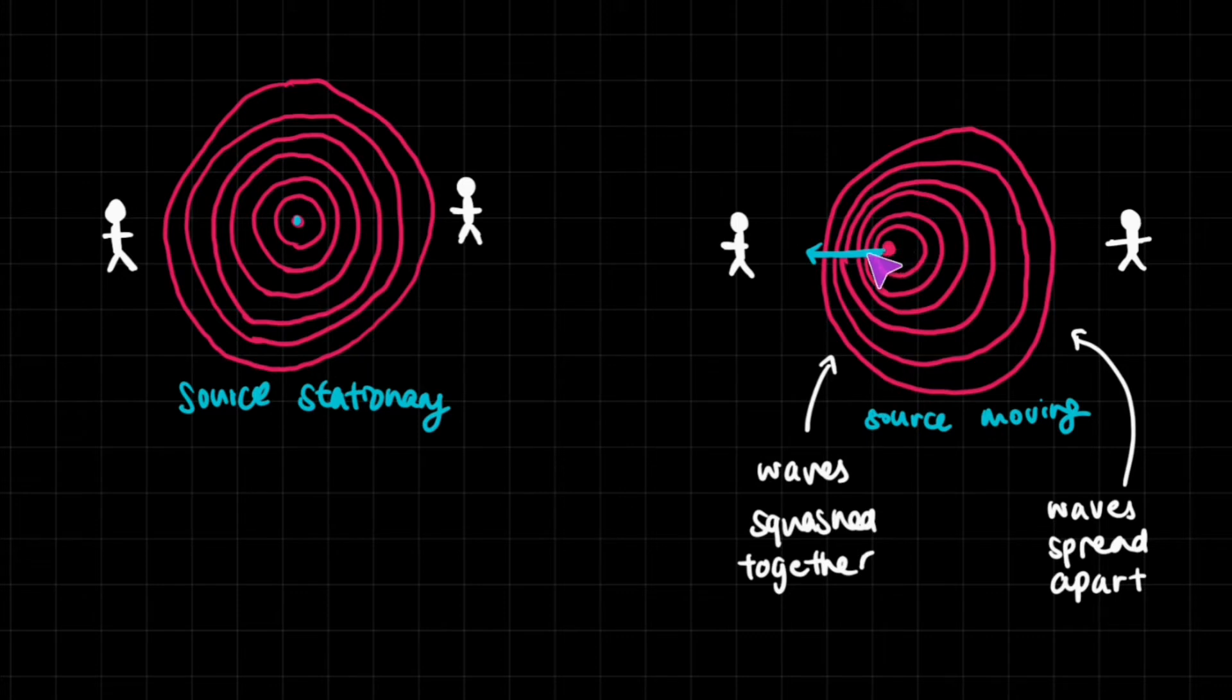Now this is not the case if the source is moving. If the source moves towards a certain place, even though they're emitting the same exact frequency, note that the circles are about the same size as the ones that are here when they're stationary. So take a look at the source moving diagram.